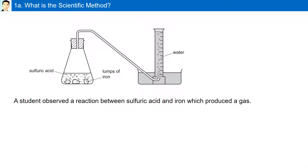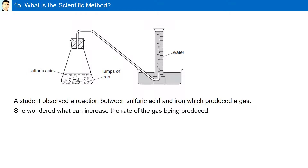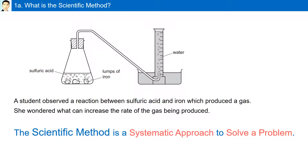What is the scientific method? A student observed the reaction between sulfuric acid and iron, which produced a gas. She wondered what can increase the rate of the gas being produced. The scientific method is a systematic approach to solve a problem.